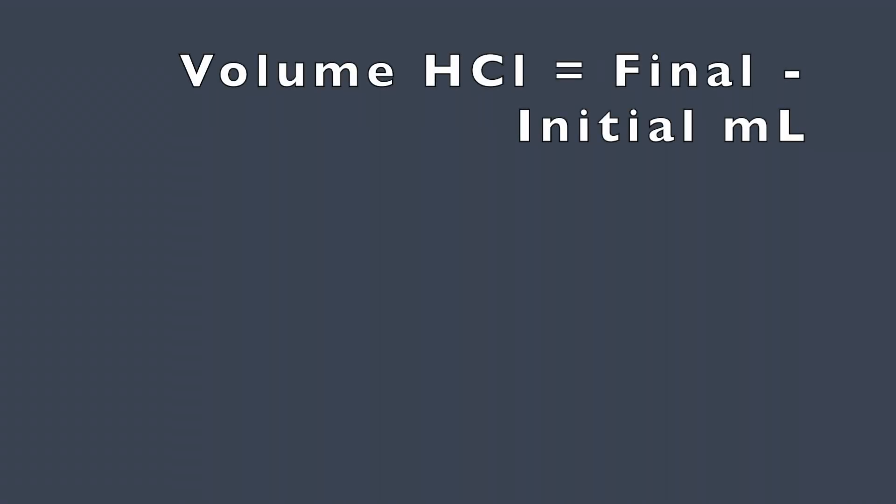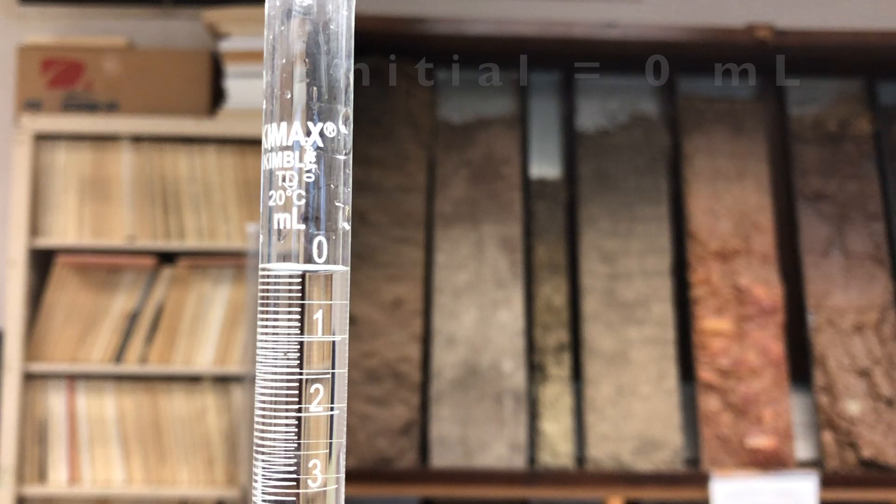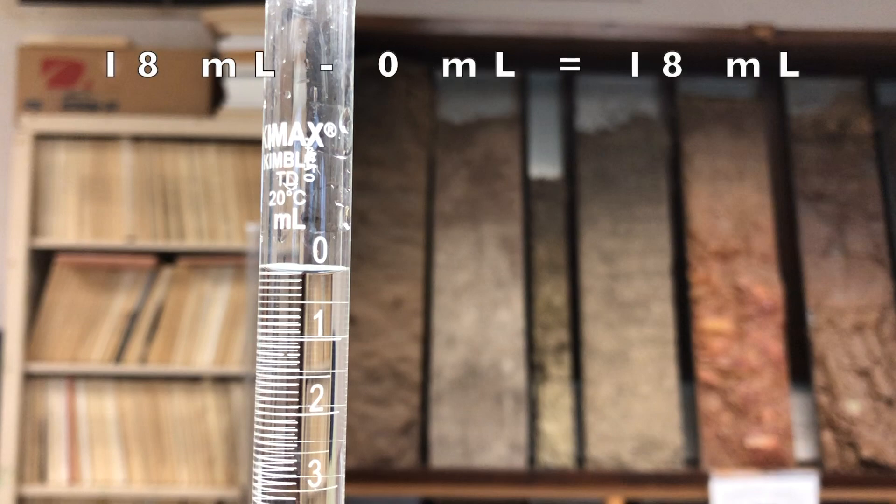Remember that the volume of hydrochloric acid used is equivalent to the final volume minus the initial volume. For example, if the final volume were 18 milliliters and the initial volume were zero milliliters, then you would have used 18 milliliters of hydrochloric acid in the titration.